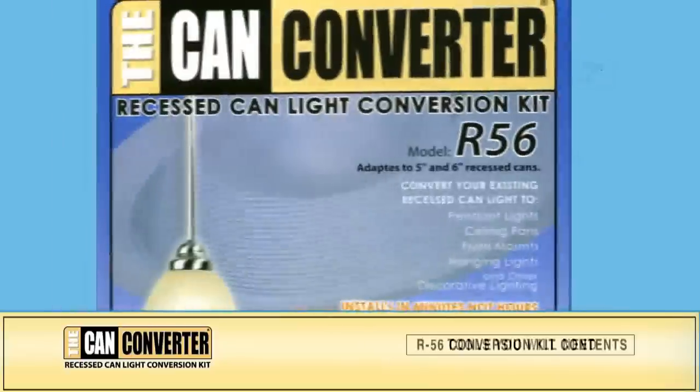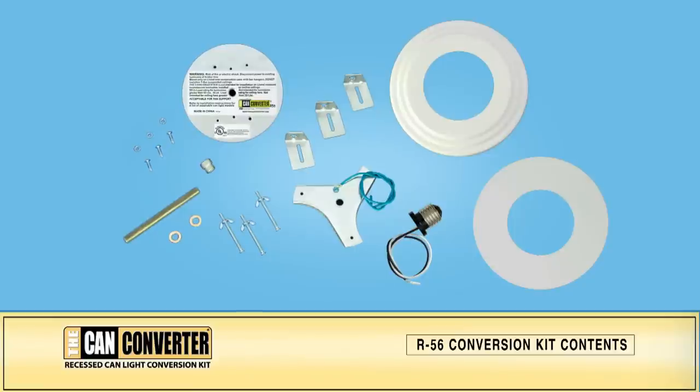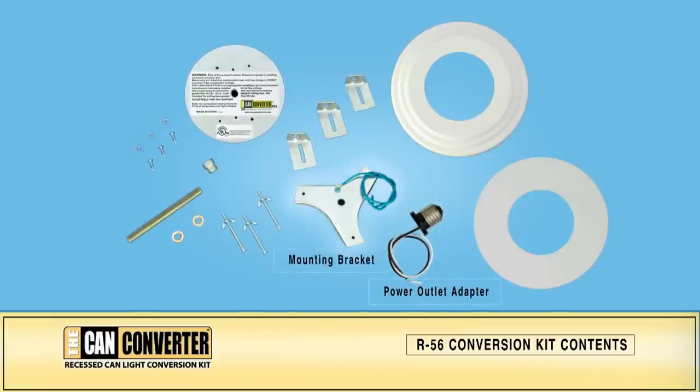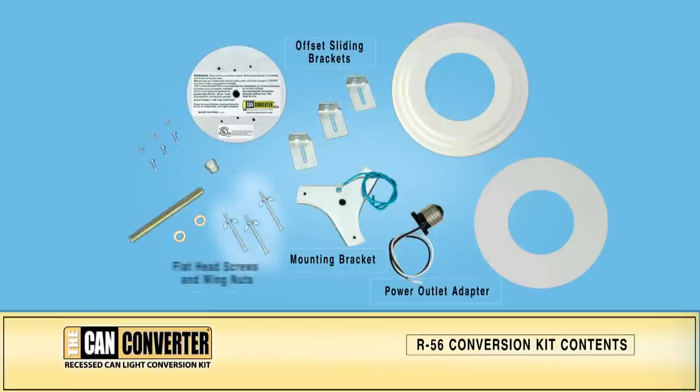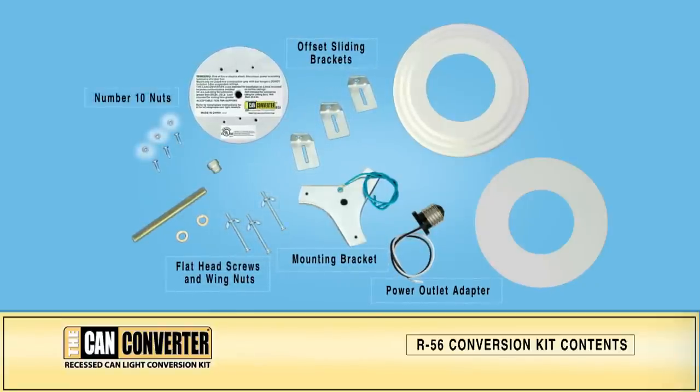To get started, lay out the contents of the CAN converter box. Your box will contain a power outlet adapter with power leads, a mounting bracket, three offset sliding brackets, three flat head screws, each with a wing nut or number 10 nuts.